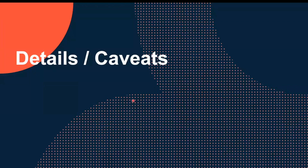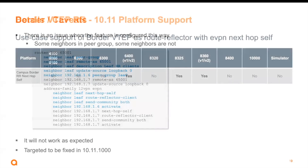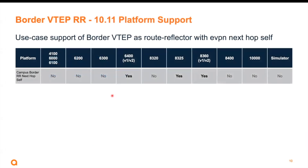Details and caveats. There's currently an issue when the feature is configured with a mixture of neighbors — some in a peer group and one neighbor not configured in the peer group. It will not work as expected, but this is targeted to be fixed in 10.11.1000. The platforms that support EVPN next hop self with the border as a route reflector are the 6400, A325, and A360.